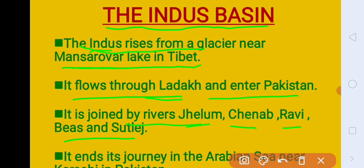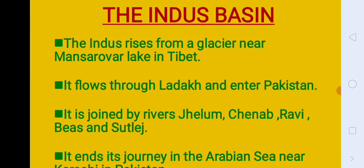These tributaries are Jhelum, Chenab, Ravi, Beas, and Satluj. Or ini jo paanch rivers hain — five rivers ke naam par hi Punjab ka naam bana tha, that is Punjab. Panch means paanch, aab means paani — paanch paniyon ki dharti hai, that is Punjab.